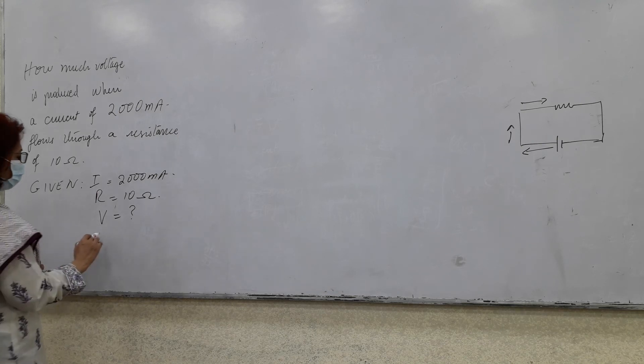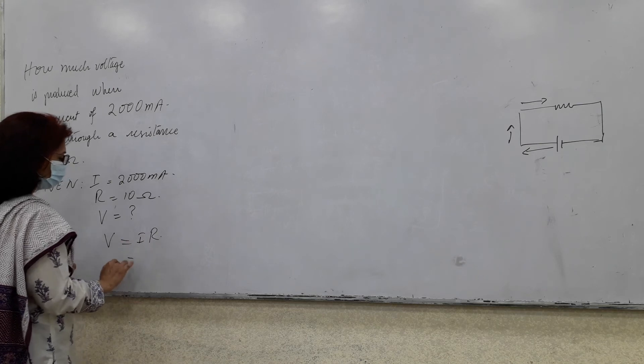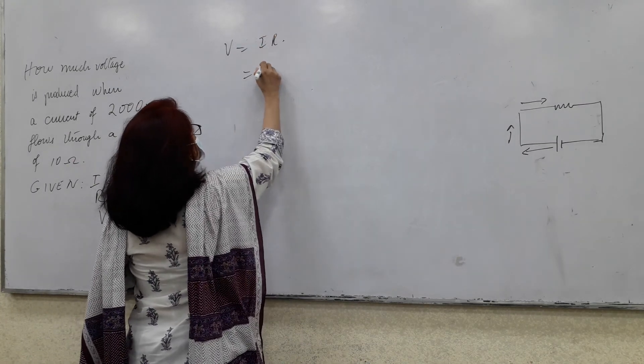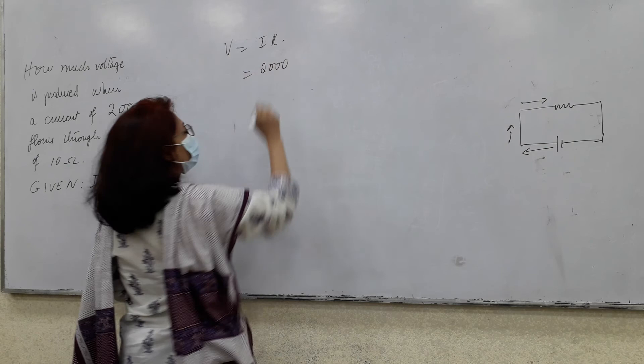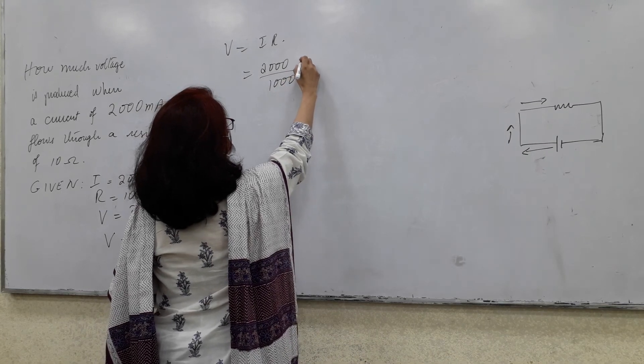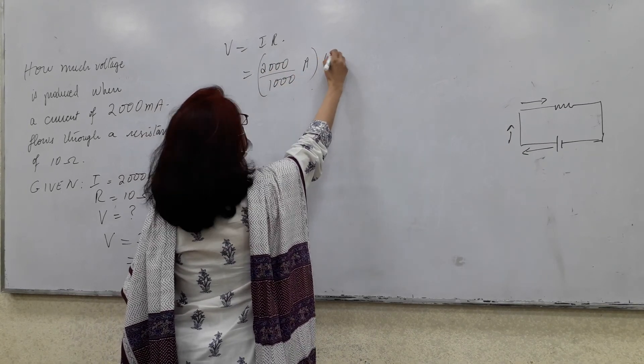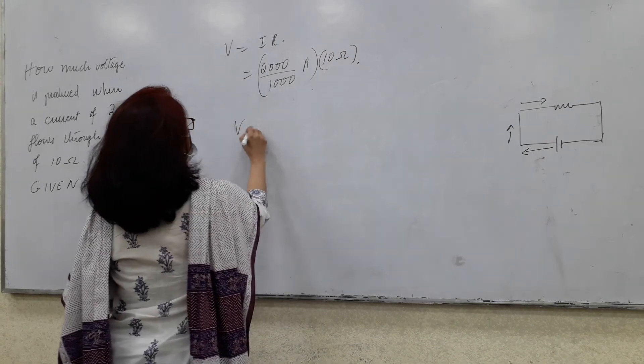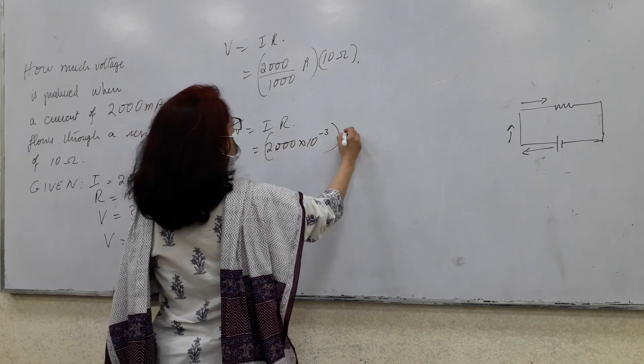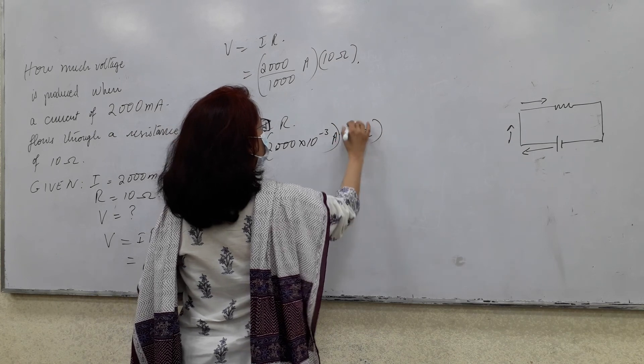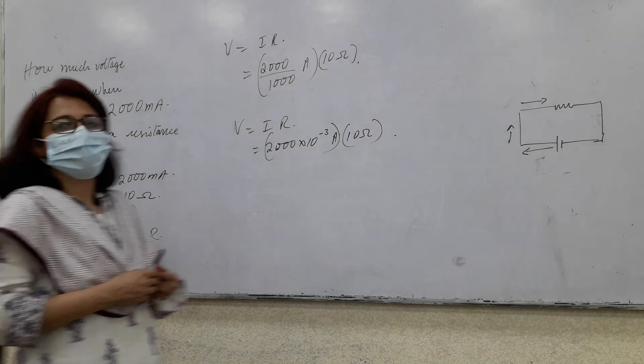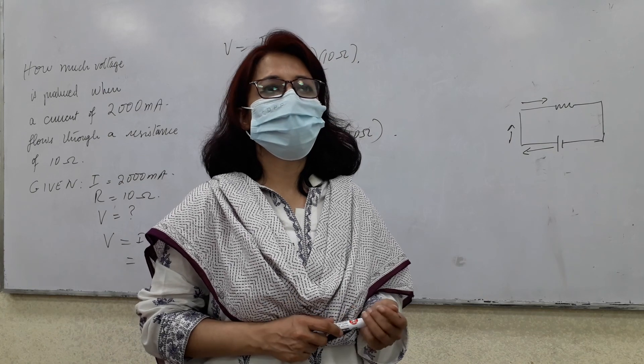The formula is V equals IR. V equals 2000 divided by 1000 into 10 ohms. Another way of doing this: 2000 into 10 raised to minus 3 amperes and then 10 ohms. But remember to convert. So it is 20 volts. This is complete now. Take care.